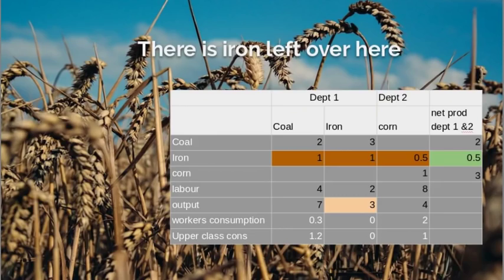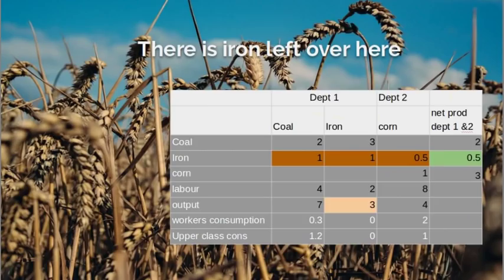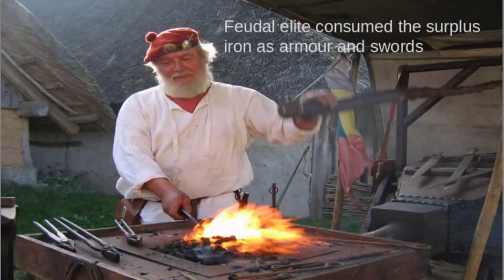I show some means of production going into elite consumption. Why is that? It's because there was iron left over in that table. If we take the net product of Departments 1 and 2 — what I call the basic economy, which is Department 1, Department 2, and the reproduction of labour power — this produces the surplus that the elite consume. There's a surplus of iron there, and also half a unit of coal and half a unit of iron left over. This is a very simple economy, not much different from what you had in the days of feudalism.